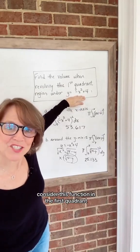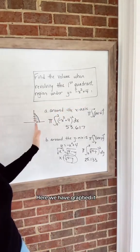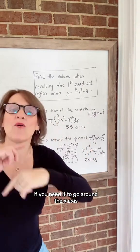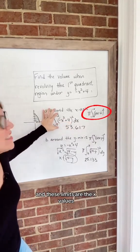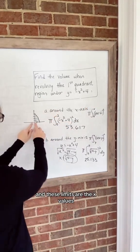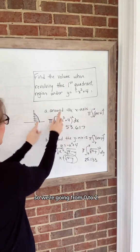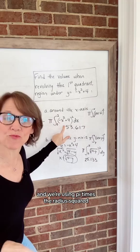Consider this function in the first quadrant. Here we have graphed it. If you need it to go around the x-axis, you're going to make sure you're using x's here, and these limits are the x values. So we're going from 0 to 2, and we're using π times the radius squared.